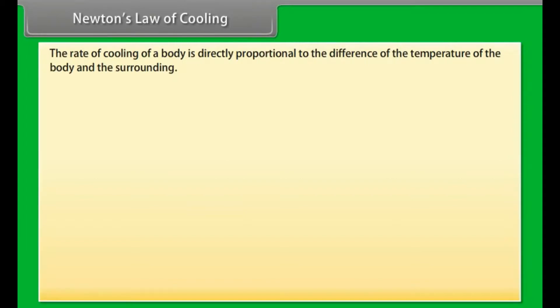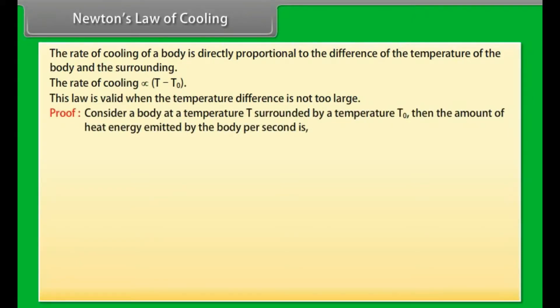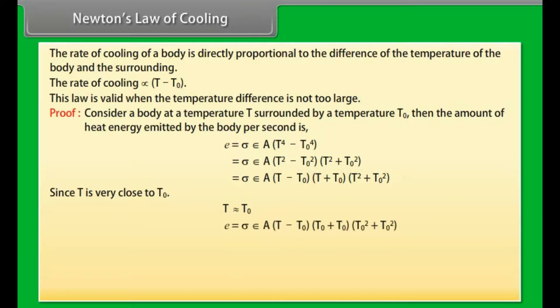Newton's law of cooling. It states that the rate of cooling of a body is directly proportional to the difference of the temperature of the body and the surrounding. The rate of cooling ∝ (T - T₀). This law is valid when the temperature difference is not too large. Let's see the proof. Consider a body at a temperature T surrounded by a temperature T₀. Then the amount of heat energy emitted by the body per second is E = σ ε A (T - T₀)(T + T₀)(T² + T₀²). Since T is very close to T₀, it implies E ∝ (T - T₀). Rate of cooling ∝ (T - T₀). It proves Newton's law of cooling.